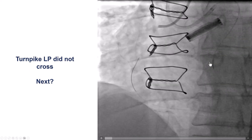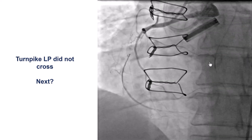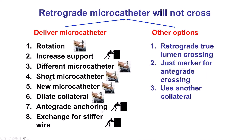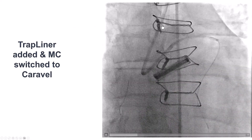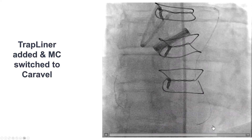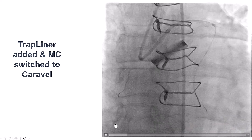However, the problem — and this is not infrequent with small CC0 collaterals — is that the microcatheter would not cross. There is a fairly well-defined algorithm for the next options: strategies that increase support and strategies that modify the collateral. In this particular case, we used a new microcatheter, a Caraval, that has a lower profile. We also used a guide extension on the retrograde guide to increase support. A TrapLiner was advanced all the way to the origin of the septal, and then using the Caraval microcatheter, we were able — actually relatively easily — to advance it all the way to the distal right coronary.